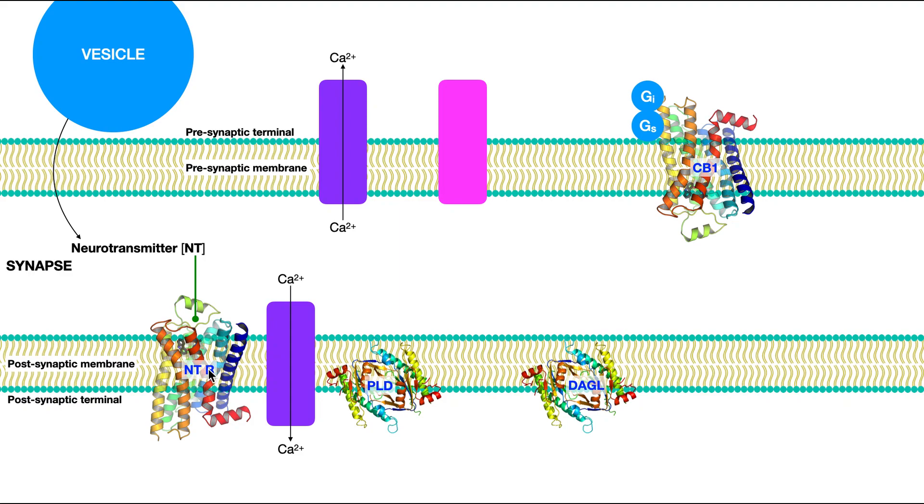When we get calcium influx up here, that's going to cause the release of neurotransmitter into the synapse. And then of course, that neurotransmitter is going to bind to its receptor on the postsynaptic membrane. And let's say that this receptor, when it has bound neurotransmitter, it causes the activation of this calcium channel. And so now calcium will influx into the cytoplasm of the postsynaptic neuron.